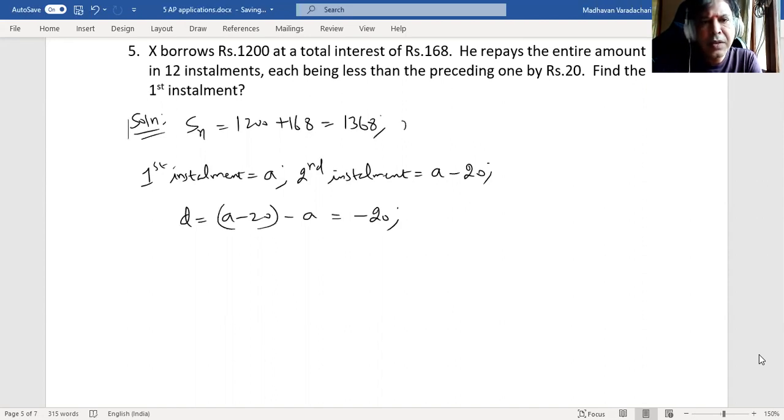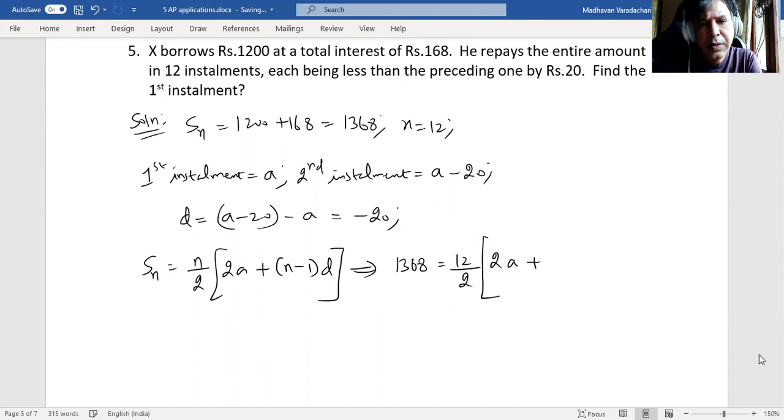Now number of installments is also given as 12, so these are available. Now let us substitute Sn formula which is n by 2 times 2a plus (n minus 1) times d, which means 1368 equals 12 by 2 times 2a plus (12 minus 1) times d. d is negative 20.